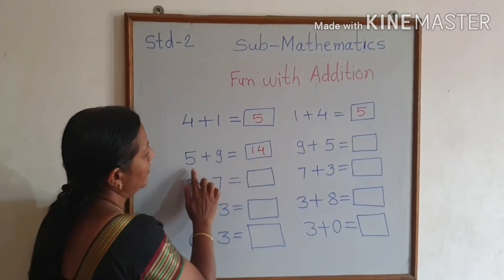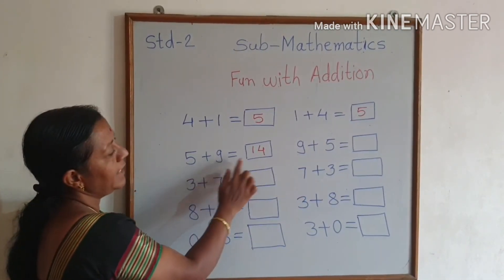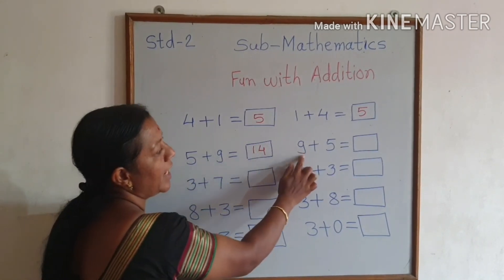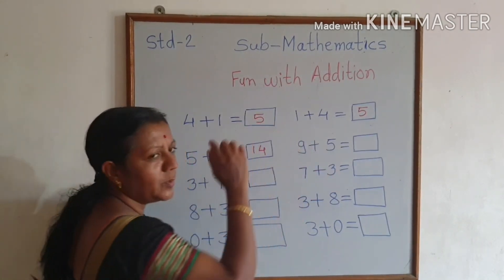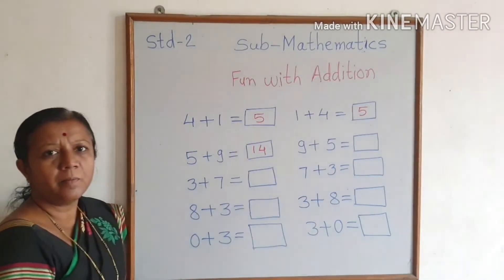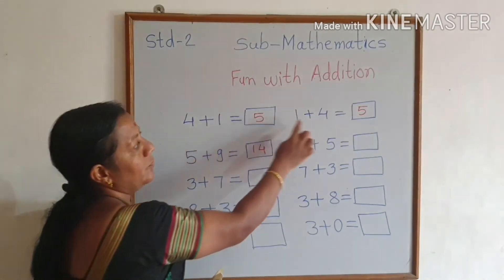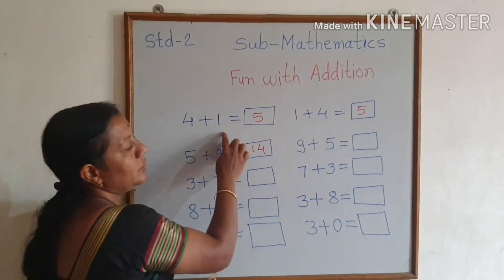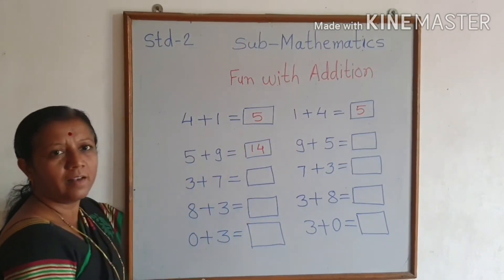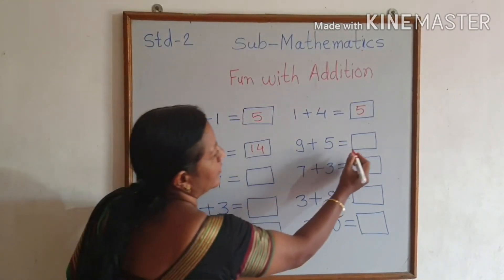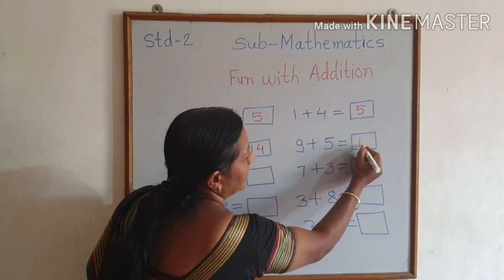Correct, 14. Now tell me, 5 plus 9 is equal to 14. So 9 plus 5 equals how many? Do you notice from this example? Correct, 14.